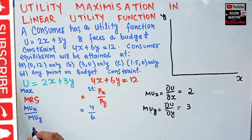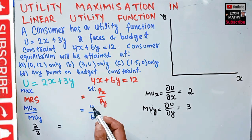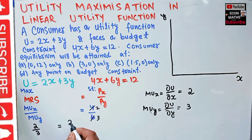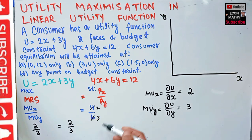So the ratio MUx/MUy equals 2/3, and this should equal the ratio of the prices Px/Py = 4/6, which simplifies to 2/3. We are also getting 2/3 on the price ratio side. That means the marginal rate of substitution is exactly equal to the ratio of the prices.